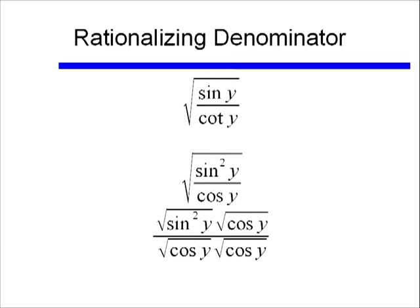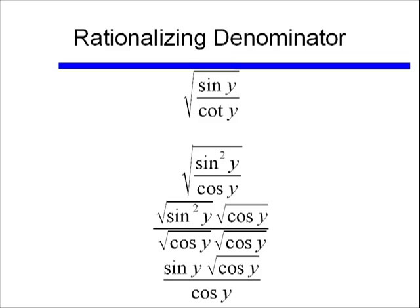When I do that, I end up with, in my numerator, the square root of sine squared y, which is just equal to sine y, times the square root of cosine y, all over, well let's see, the square root of cosine y times the square root of cosine y, that's just equal to cosine y. So this is my final answer when I rationalize my denominator.